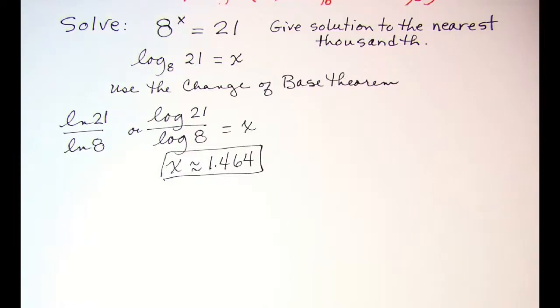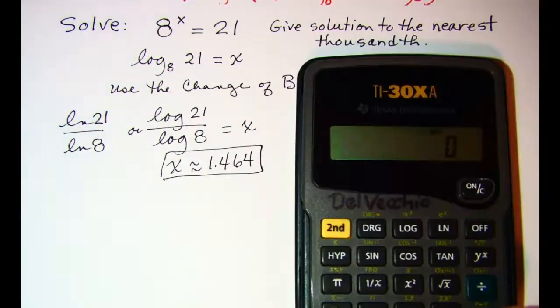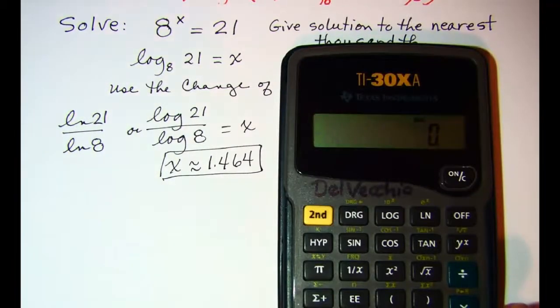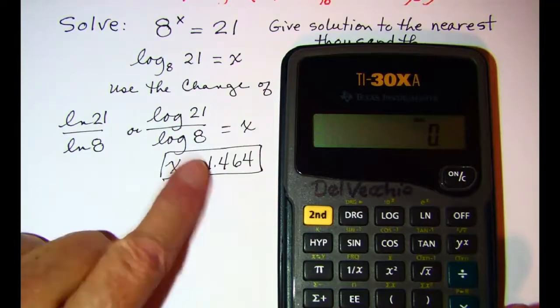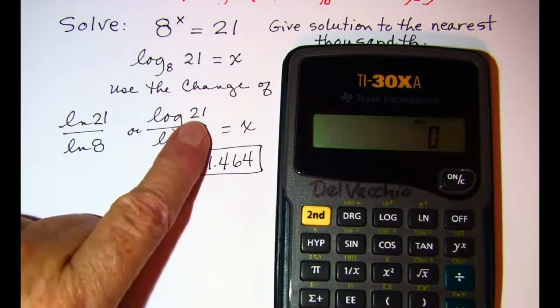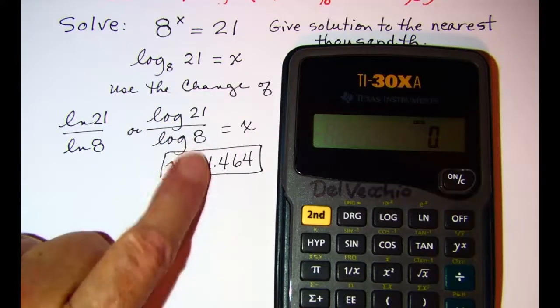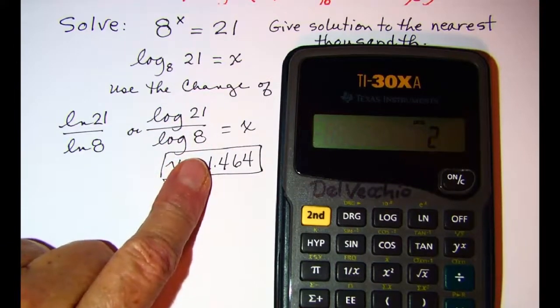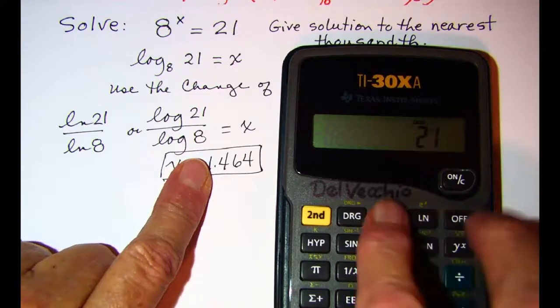Now if you're using this type of calculator, we have to do everything backwards. So we're going to be taking 21 log. So we would first enter 21 and then hit the log button.